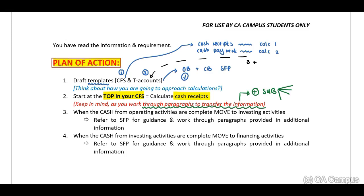When you are complete with your cash from operating activities, move to your investing activities. Refer to your statement of financial position for guidance and work through your paragraphs from the top again, briefly, relating to additional information. You have ticked off your opening and closing balances, so you need to be able to identify, when you reconcile your asset or liability accounts, whether this will have an effect on investing activities or financing activities. As you identify this, immediately transfer your amounts — you're in a zone thinking about that problem, so transfer it and move on.